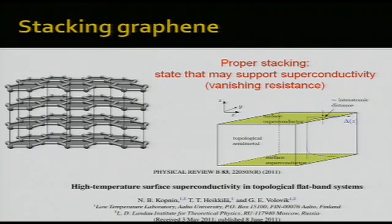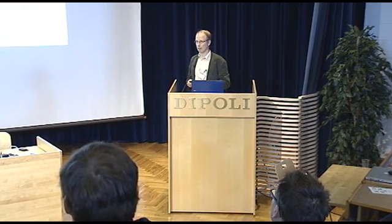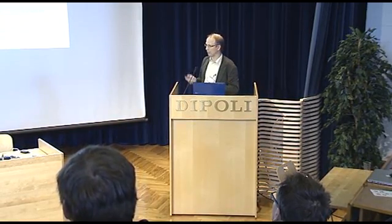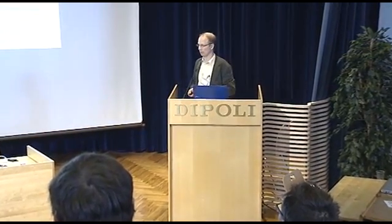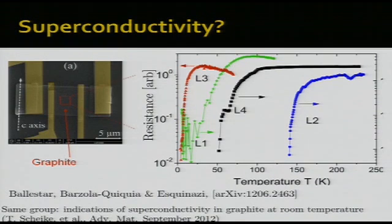I have only a couple of minutes left, so I'll flash a couple of other topics we've studied. One topic is what happens if you take graphene layers and stack them on top of each other. You can do different kinds of stackings, and we found that a certain kind supports a very high-temperature superconducting state. We suggested the possibility of superconductivity at very high temperature in these systems. This summer, people reported superconductivity in graphite layers at at least 150 Kelvin (minus 120 Celsius), and very recently this month the same group reported an indication of room-temperature superconductivity, though it's not yet totally clear.